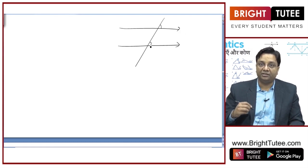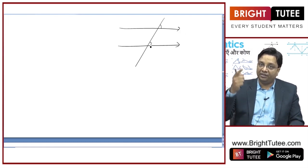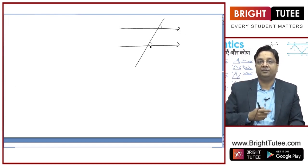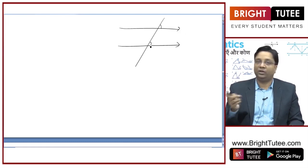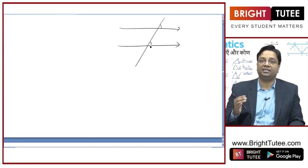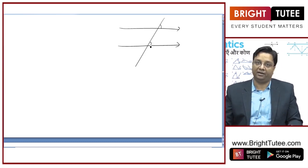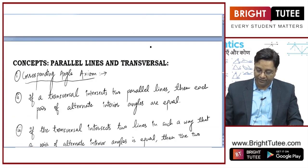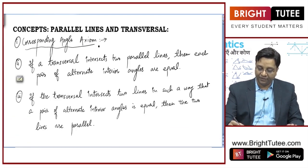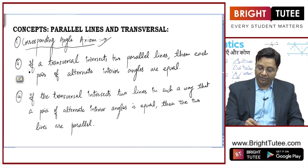The converse of this axiom is: if a transversal cuts two lines and the corresponding angles are equal, then these two lines will be parallel to each other. This is the corresponding angles axiom that we will use in this chapter.